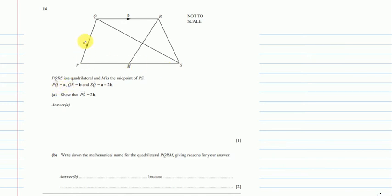PQ from P to Q is A, from Q to R is B, and from S to Q is A minus 2B, this root from S to Q.